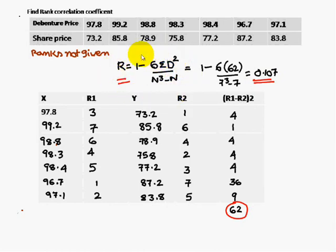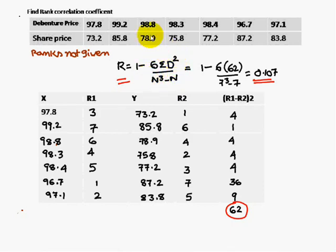Always remember the formula: r = 1 minus (6 × Σd²) / (n³ − n). To find the rank correlation coefficient, you must always first obtain the ranks. That is the key step to remember. Thank you.